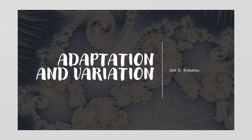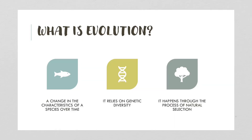In this video, we're going to discuss adaptation and variation and how those terms apply to our evolution unit. First of all, what is evolution? That is a change in the characteristics of a species over time. It relies on genetic diversity and it happens through the process of natural selection, which we'll spend a lot of time discussing in later lessons as well.